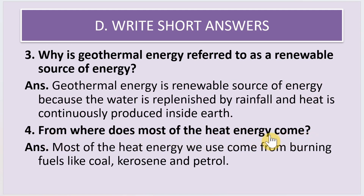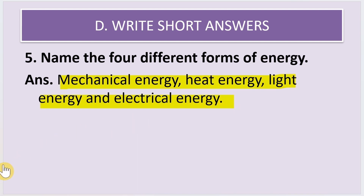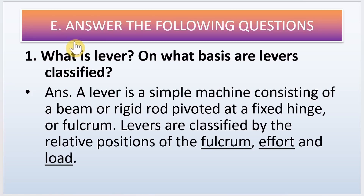Fourth short answer: from where does most of the heat energy come? Most of the heat energy we use comes from burning fuels like coal, kerosene, and petrol. Fifth: name the different forms of energy. The answer is mechanical energy, heat energy, light energy, and electrical energy — these are the four different forms of energy.